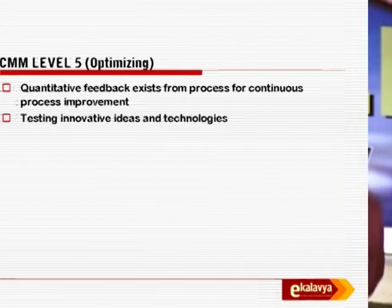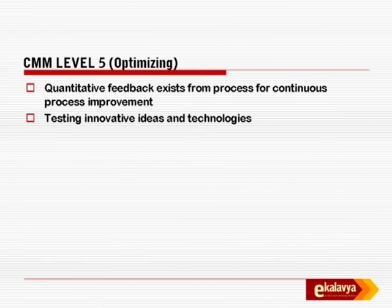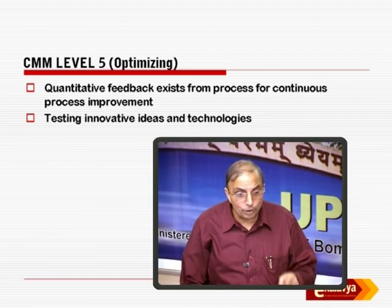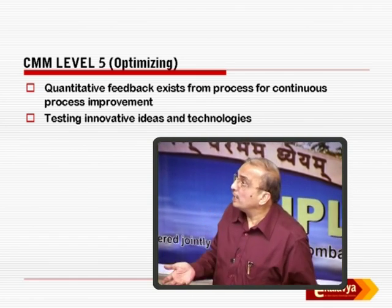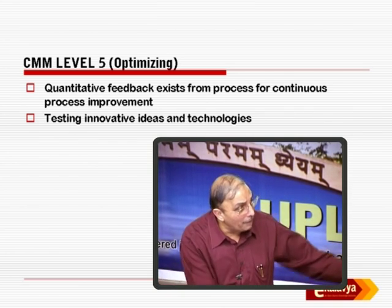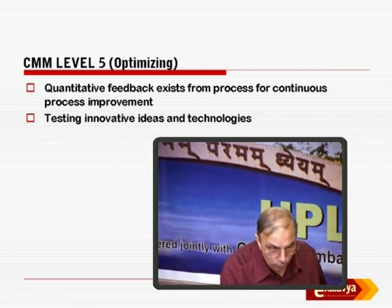CMM levels say that if you are at level 1 you are here, level 2 here, level 3 here, level 4 here. At level 4, not only are processes documented and followed, but quantitative feedback exists from the process for continuous process improvement — the documented process itself undergoes changes based on feedback received on certain projects. Level 5 permits testing innovative ideas and technologies.